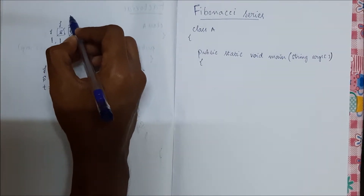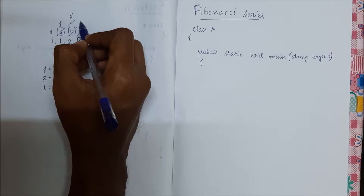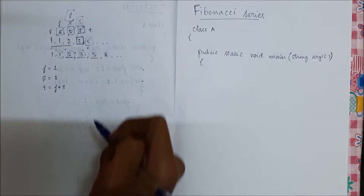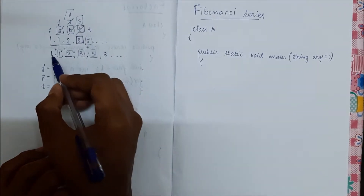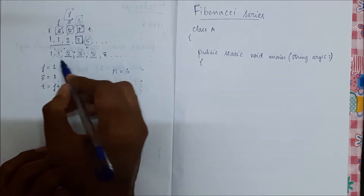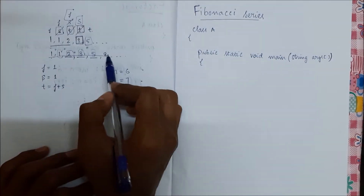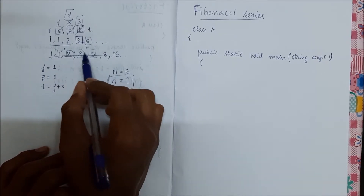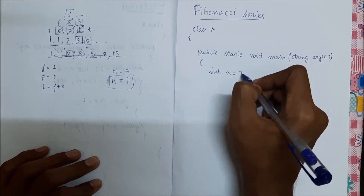We make t the new second term, and then f plus s gives us the new third term. This way we proceed through one, two, three, four, five, six terms. If n equals six we print six terms; if n equals seven we print one, one, two, three, five, eight, thirteen. We need a variable n, so let's say n equals seven.